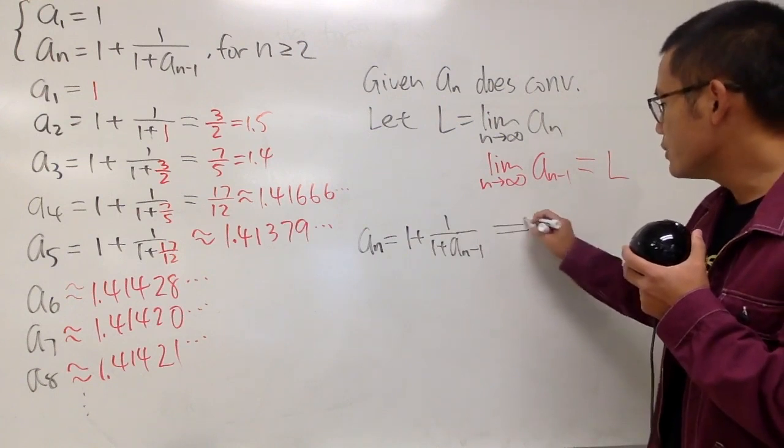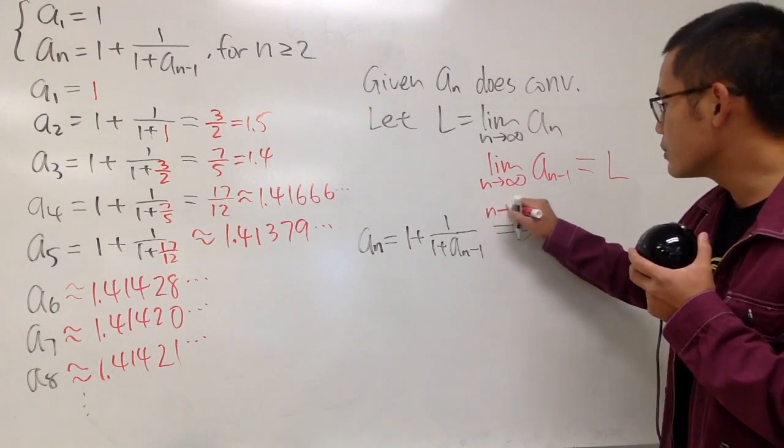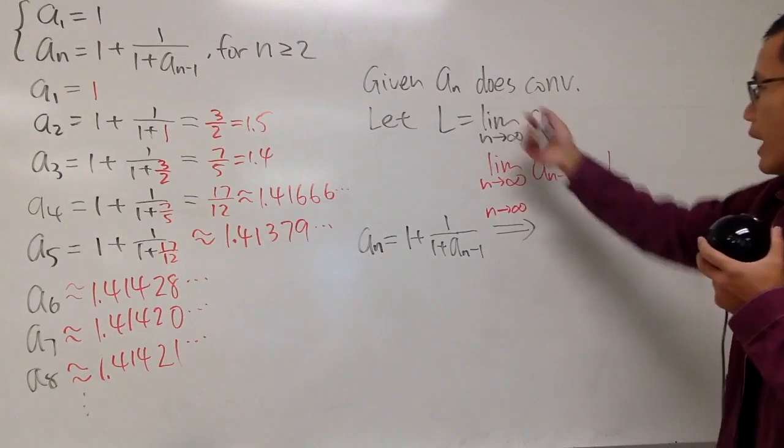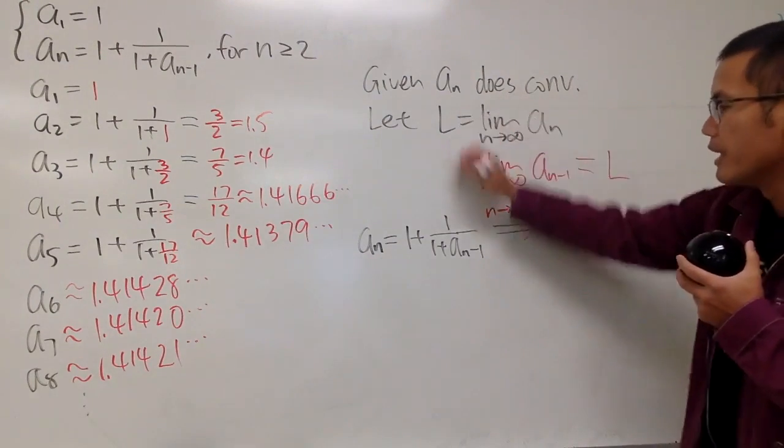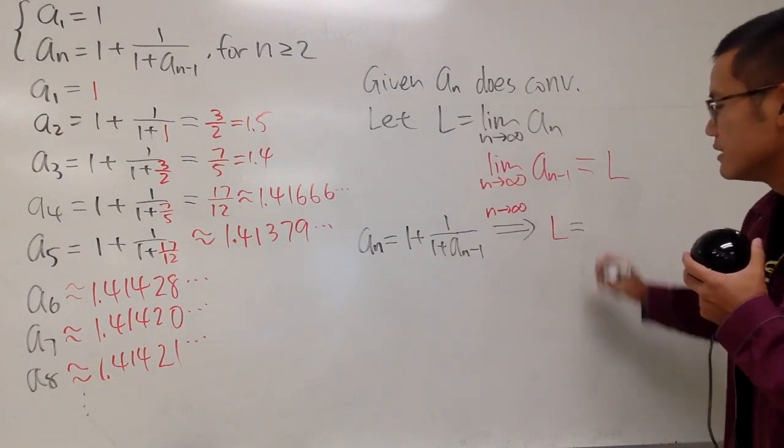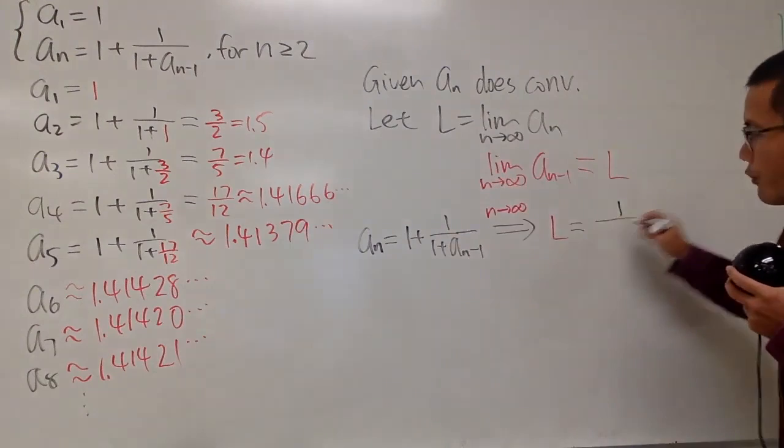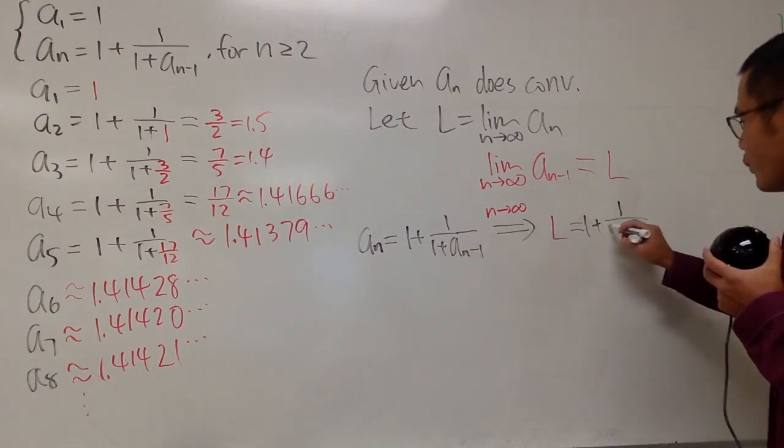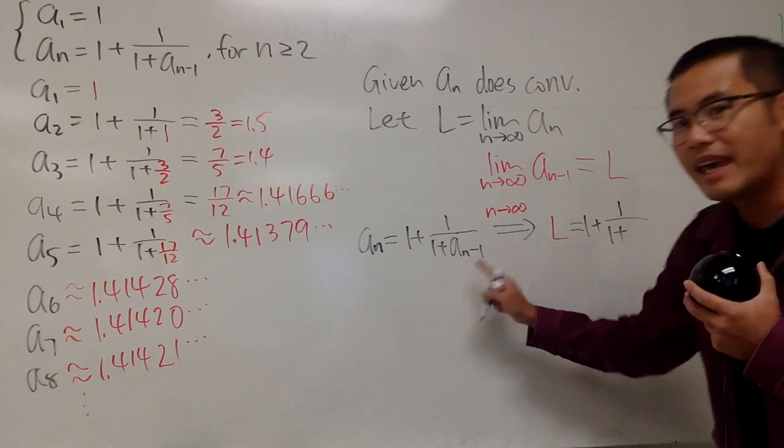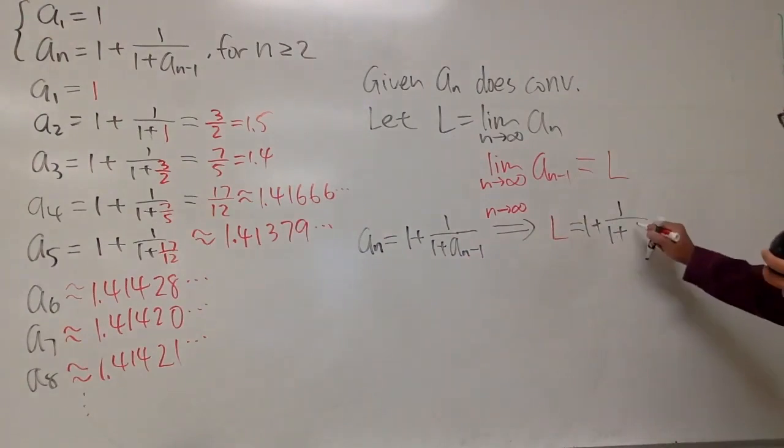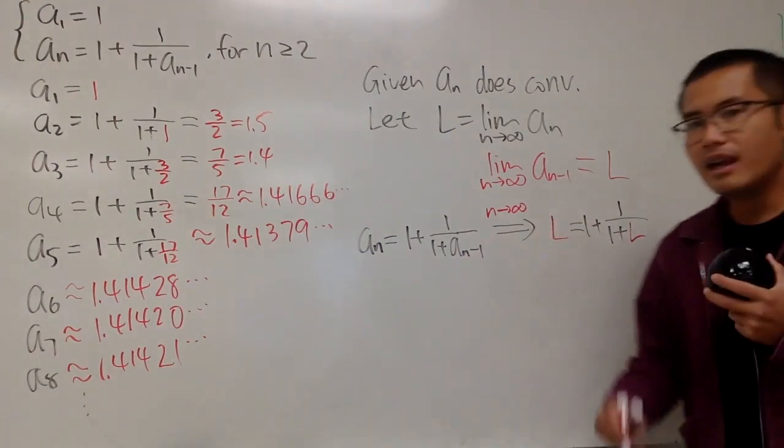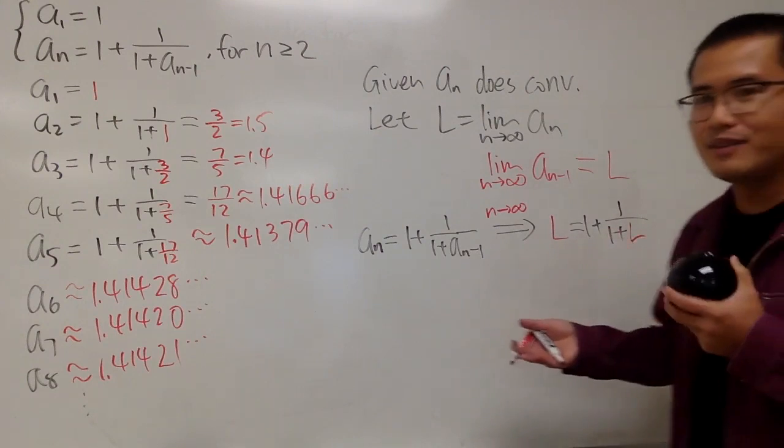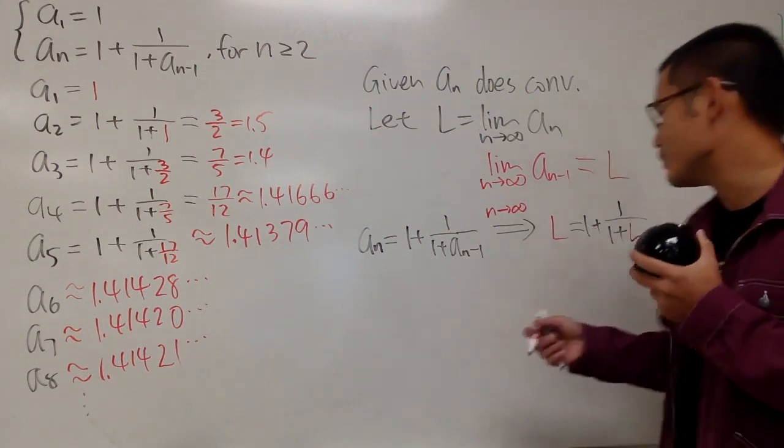aₙ equals 1 plus 1 over 1 plus aₙ₋₁. Well, we can just take the limit as n goes to infinity, and the idea is that this right here will go to L, because right here we said so. And then of course the rest we get this is equal to, and we have 1 over, well, actually 1 plus 1 over, there are so many ones, and then 1 plus this thing, aₙ₋₁, which I wrote it down, and L like this. This kind of technique will work if we end up with a finite answer right here, and then if it doesn't end up with any kind of weird situations.